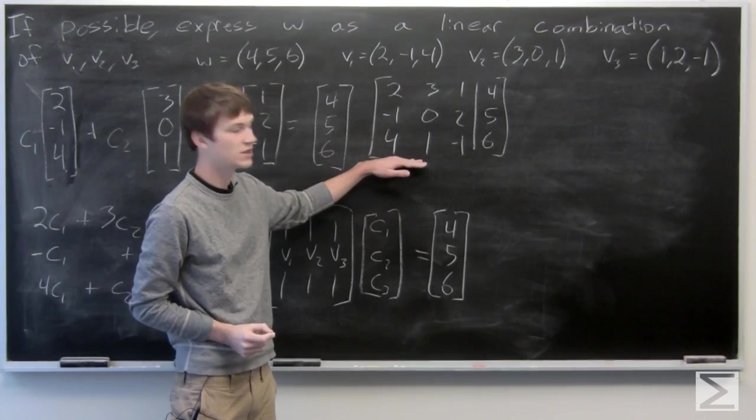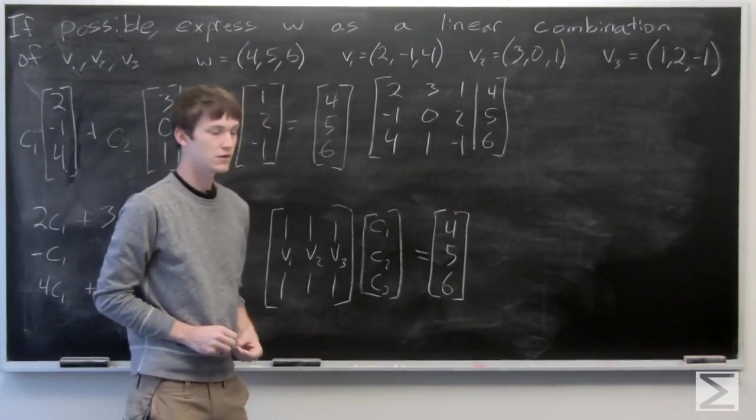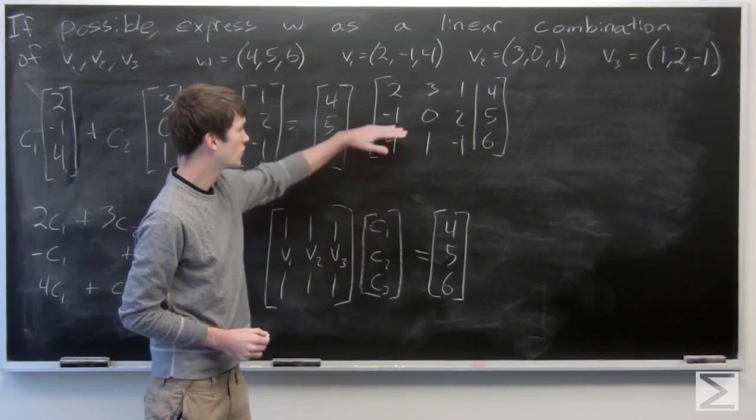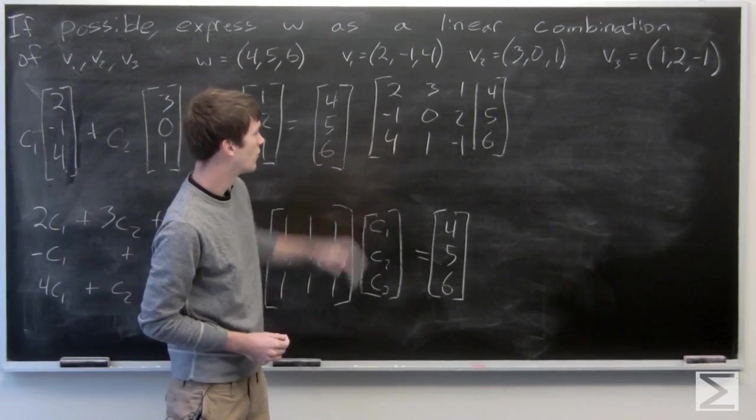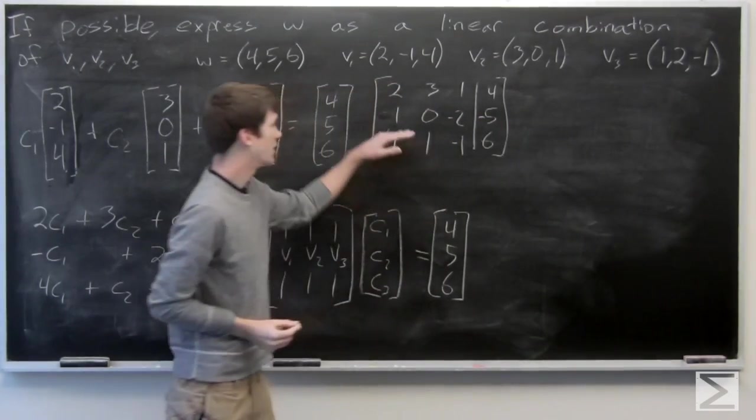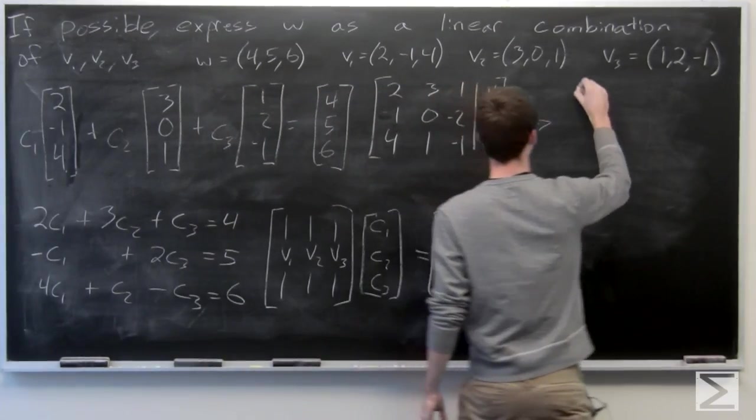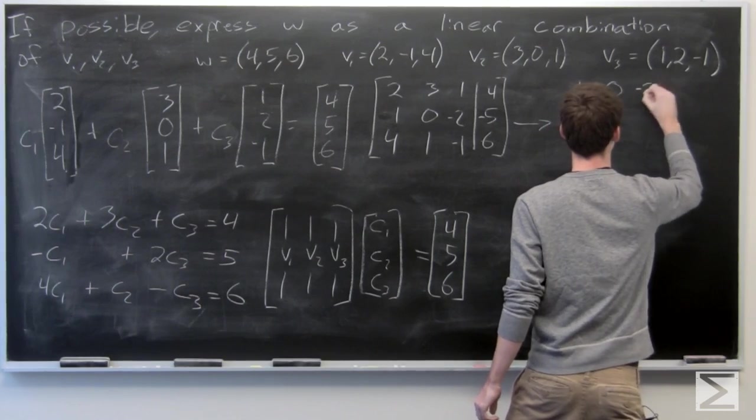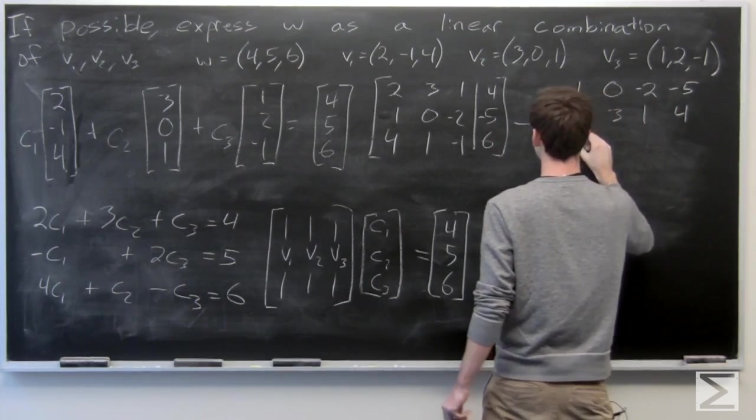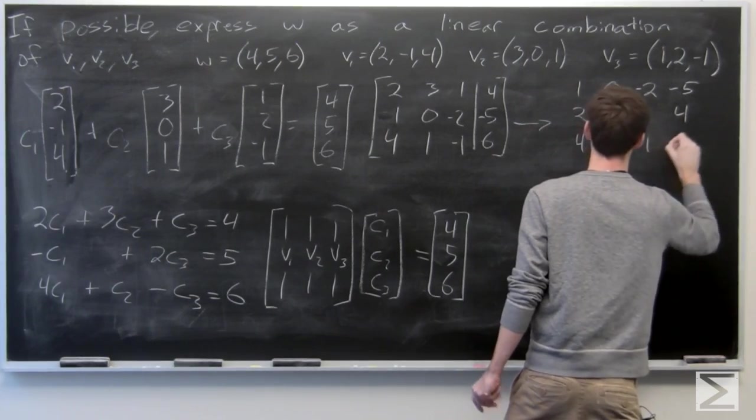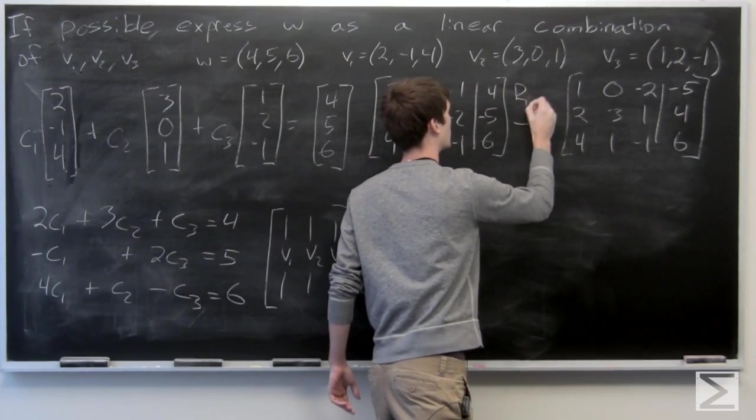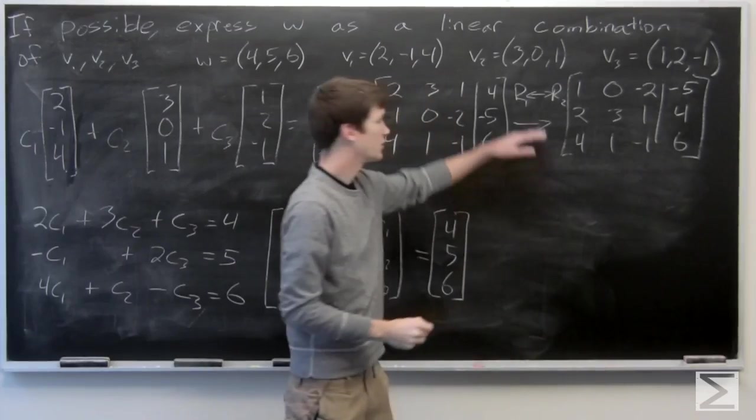So we have a matrix. So we can go ahead and start solving this. We'll swap rows 1 and 2 since there's already a 1, and we'll also negate that row. So we'll negate it first, and then we'll go ahead and swap it. So we've swapped row 1 and row 2.